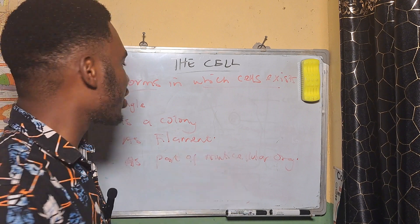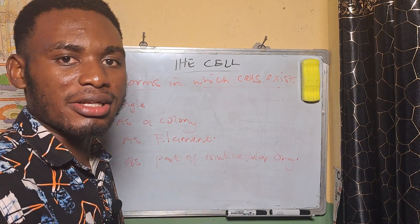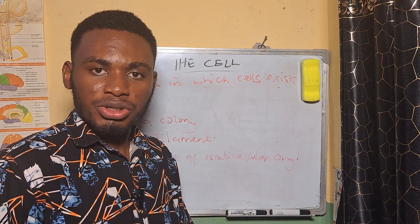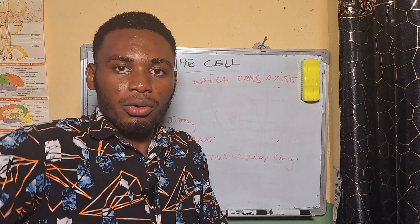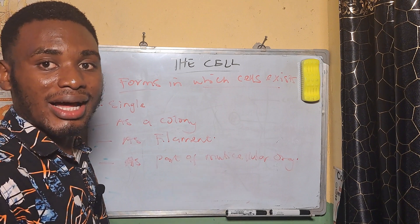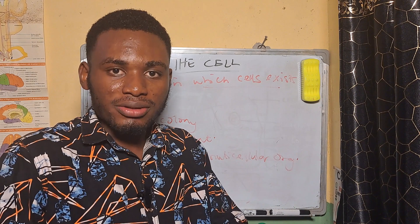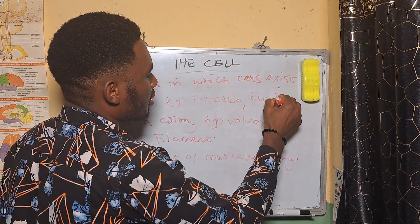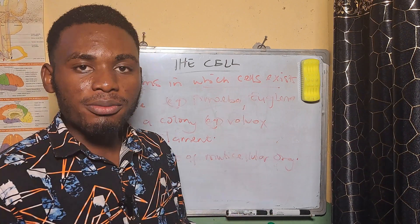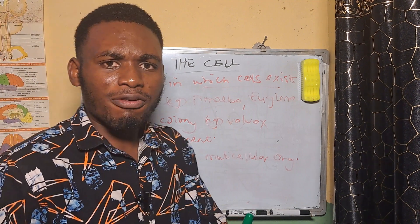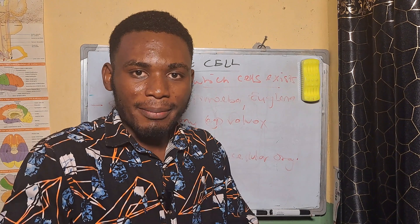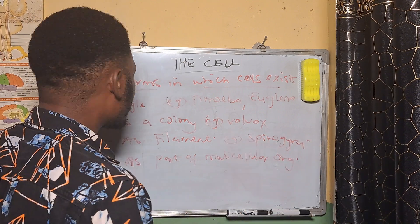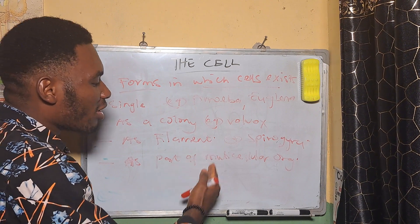Cells that exist singly — examples are the amoeba and the euglena. They are made up of a single cell and carry out the various features of a living organism: nutrition, excretion, respiration, and the rest. Some cells can come together to form a colony — an example is the volvox. Some cells come together to form up to 10 to 12 cylindrical cells called filaments, which are independent of each other — an example is the spirogyra.